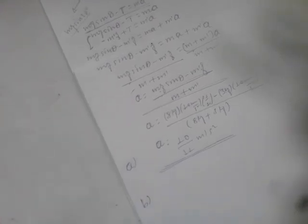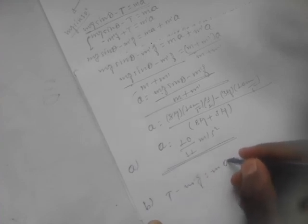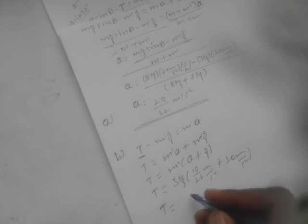For part (b), the tension force: we use the equation from the free body diagram of the spherical object — T minus m'g equals m'a. Rearranging: T equals m'(a plus g). Substituting the values, the final answer for the tension force is approximately 32.7 Newtons.